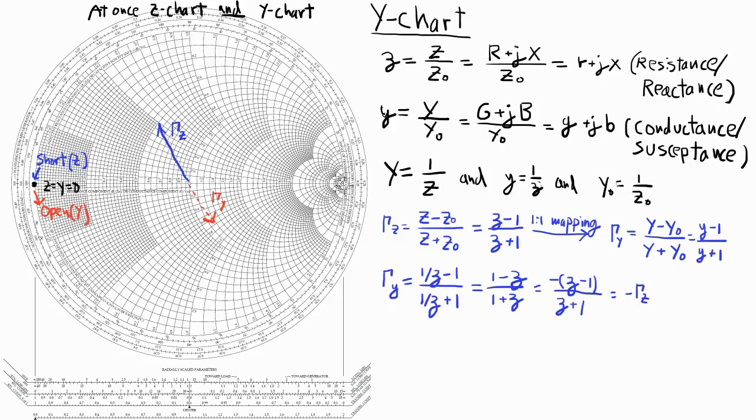Now if I go 180 degrees away from this point, then both z and y are equal to infinity. And on the z chart, I interpret this point as an open because my impedance is infinite, while on the y chart, I interpret that point as a short because my admittance is infinite.